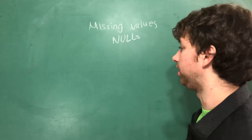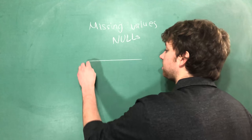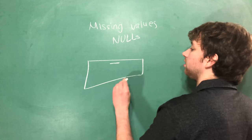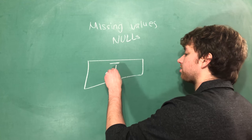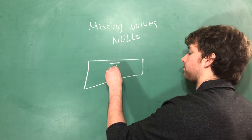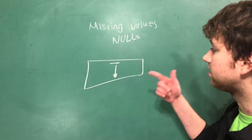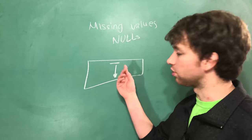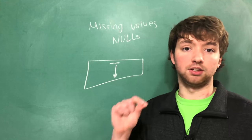So when we are going through the process of building our analytics base table, some of the features, for example, we might have one column that has a lot of nulls when we're looking at all of the different rows. This is a problem. As we lose values for a particular feature, the feature becomes less useful.